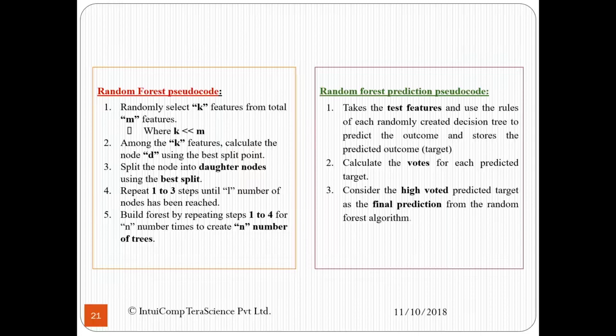Random forest predictions would occur as follows. First, take the test features and use the rules of each randomly created decision tree to predict the outcome and store the predicted outcome. Second, we calculate the votes for each predicted target. Third, consider the high-voted predicted target as the final prediction from the forest algorithm.